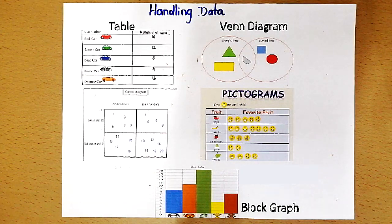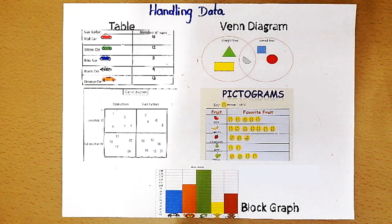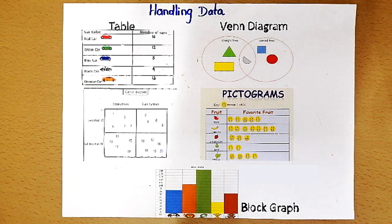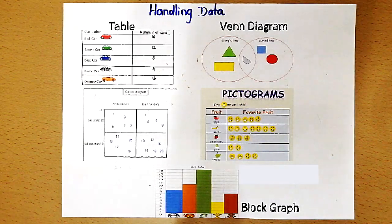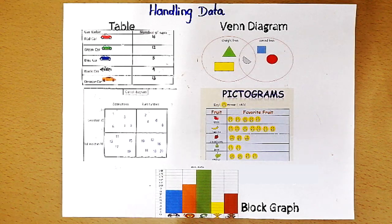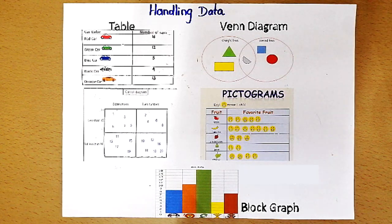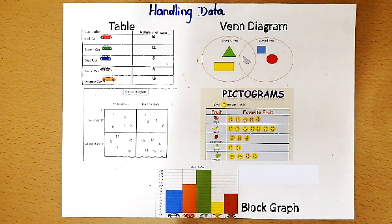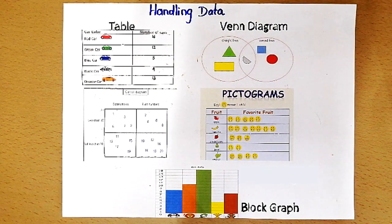Data means collection of information about people or things, and handling means you are recording and storing the information. Now there are many ways to organize the data. Let's see what they are.